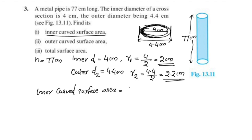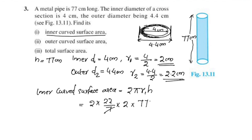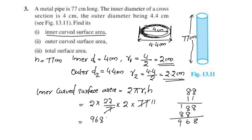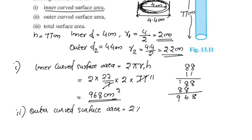The inner curved surface area is 2πr1h. This is equal to 2 into π (22/7) into r1, which is 2, into height, which is 77. We simplify: 77 divided by 7 equals 11. So we get 2 into 22 into 11 into 2, giving us 968 cm².